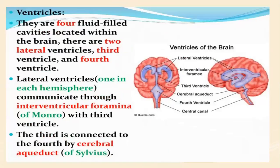Now let's talk about the ventricles, because the question mentions the cerebral aqueduct. The cerebral aqueduct is a canal-like structure found in the midbrain, connecting the third and fourth ventricles. The third ventricle is connected to the fourth by the cerebral aqueduct, also known as the duct of Sylvius.